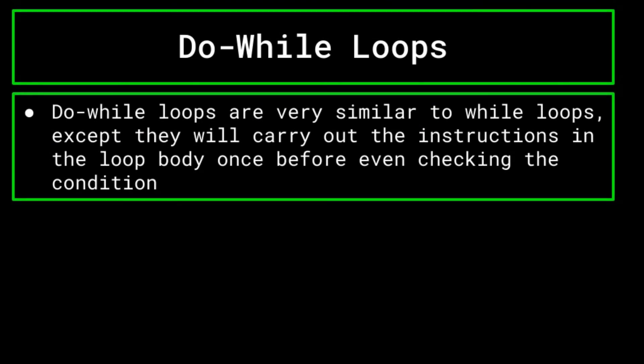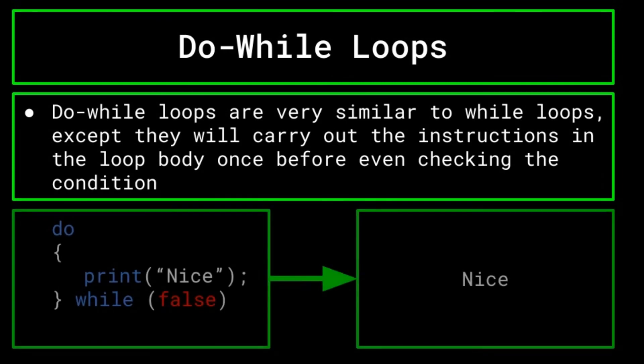Finally, I'd like to cover the do while loop. Do while loops are very similar to while loops. However, they will carry out their instructions at least once, even if the condition is false. After the first iteration of the do while loop, it will continue on as a normal while loop, carrying out its instructions so long as its condition is true.